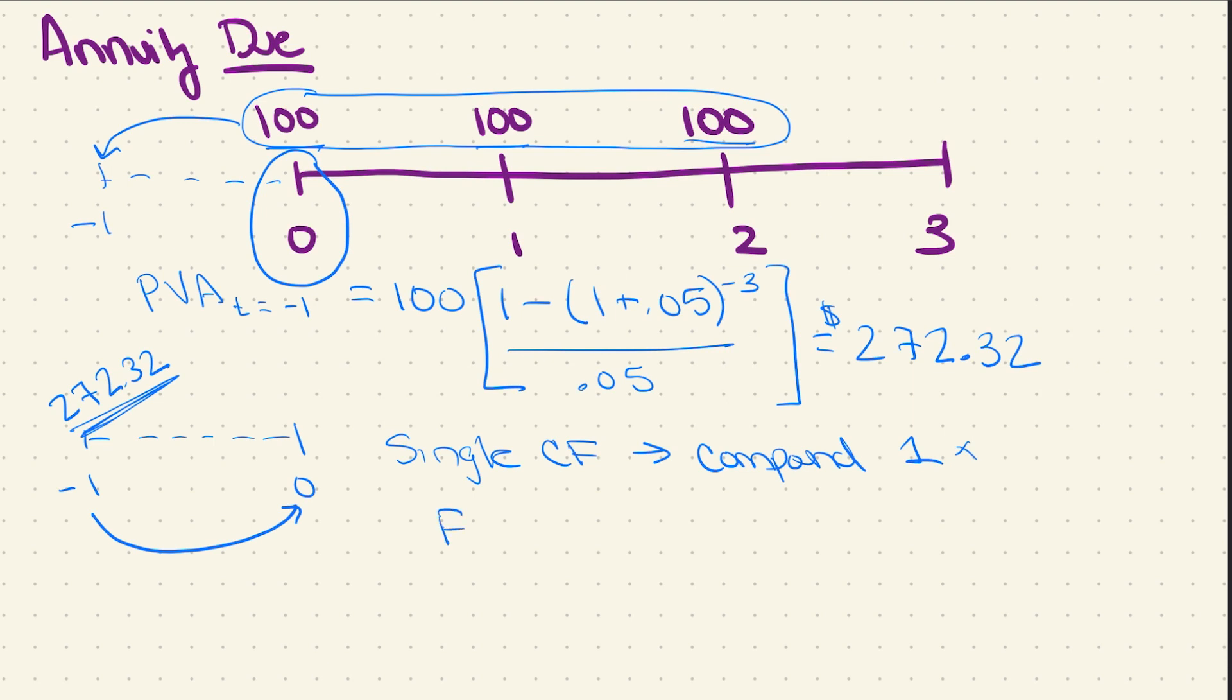The way I'm going to do this is say future value equals present value times 1 plus i to the n. So in this case, I'm going to take $272.32, compound it at 5% one time. That gives me $285.94.